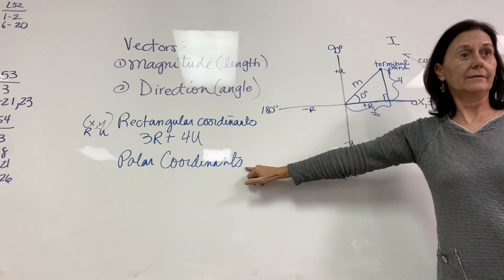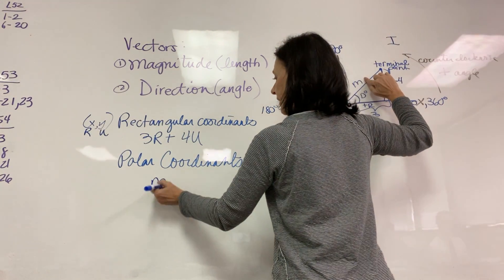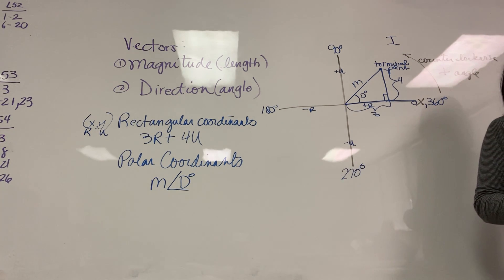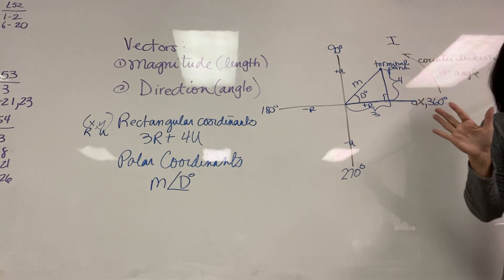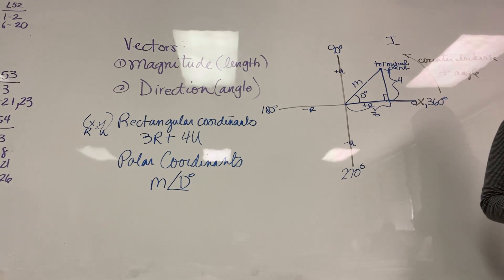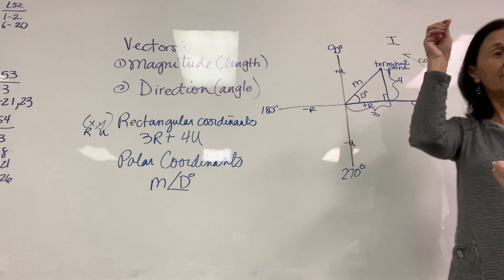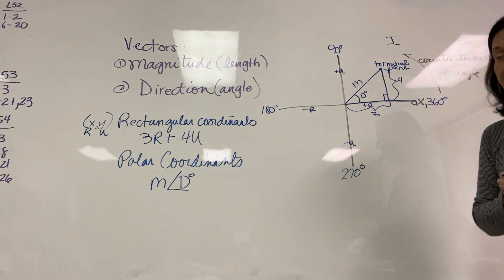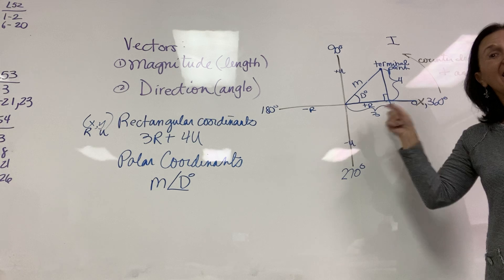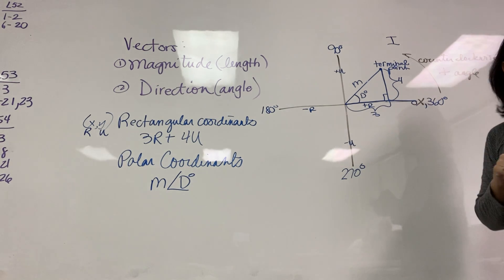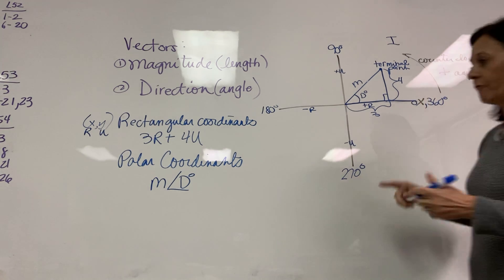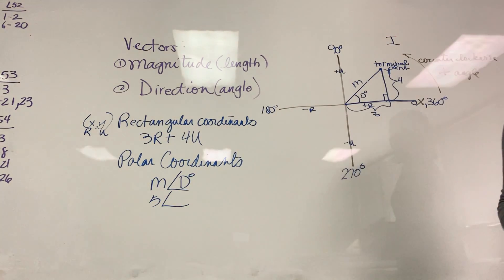Polar coordinates use m at your direction. Rectangular coordinates deal with x and y values, while polar coordinates deal with the magnitude — the length of the vector — and the angle of that vector with the positive x-axis. I don't have polar coordinates given here, but I can calculate them. This is a Pythagorean triplet — 3, 4, 5 — so the magnitude is 5. It's 5 at an unknown angle.